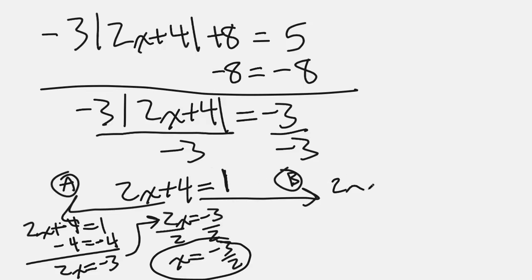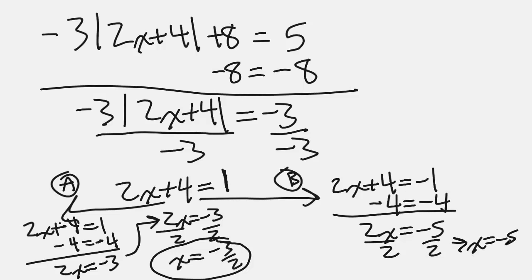Okay, the b side. We have 2x plus 4 equals negative 1 or other option. So I'm going to subtract 4 from both sides. What happens there? We have 2x equals negative 5. Then what do we have? We have 2x. We want 1x. We divide both sides by 2. And then we're left with x equals negative 5 halves.